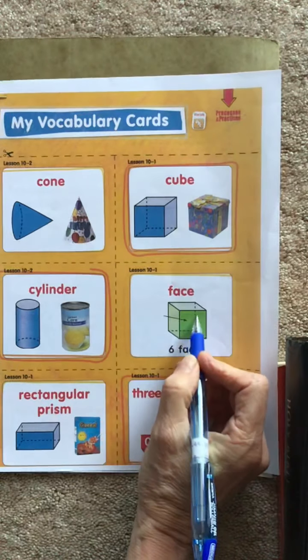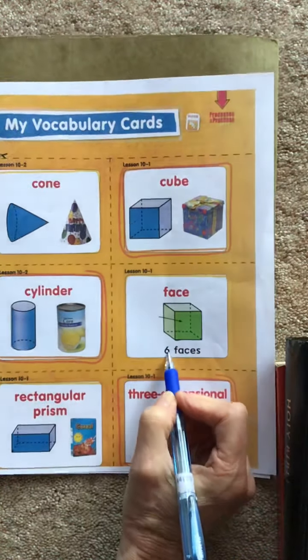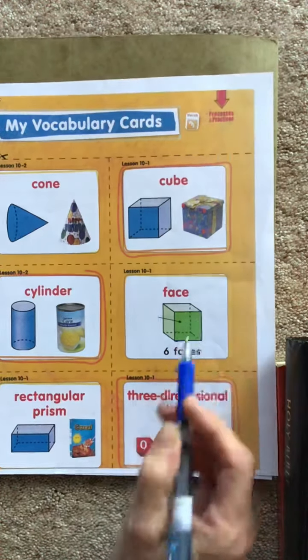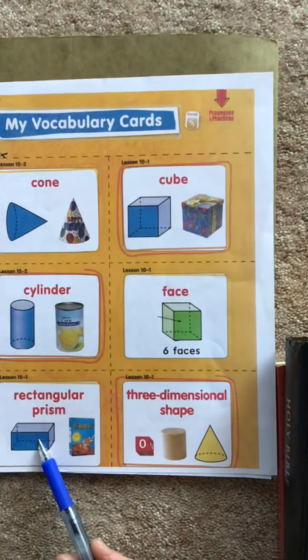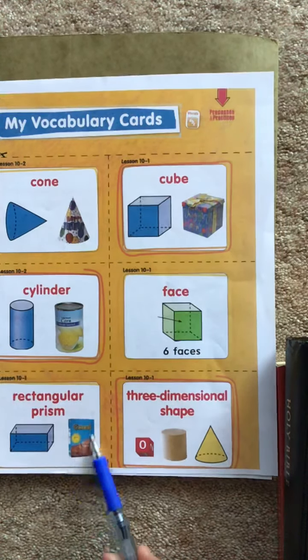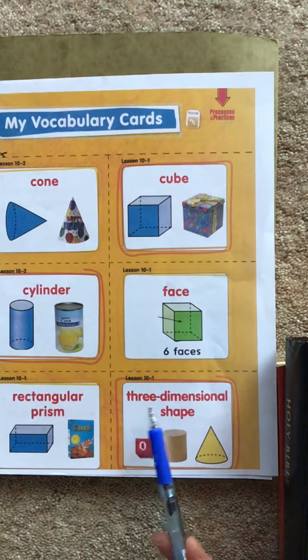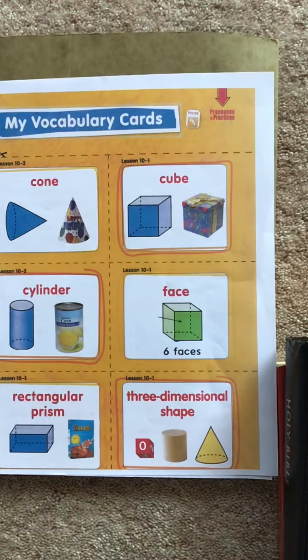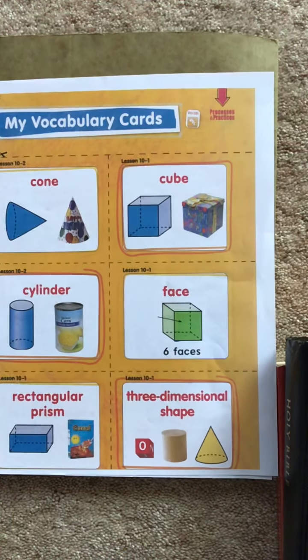This shows you in dark green that this is a face, and there are six faces on a cube. This is a rectangular prism. And a box of cereal is also a rectangular prism. And then all of these are called three-dimensional shapes that we're going to be talking about.